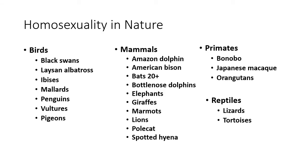That second video showed some of what's been found in nature. Note that the argument that homosexuality isn't in nature should be ignored anyway — that's the naturalistic fallacy. If something is in nature, it doesn't necessarily mean it's good or bad, and if it's not in nature, it doesn't necessarily mean it's good or bad. In actuality, any zoo worker or biologist will tell you there are literally hundreds of species where homosexuality occurs.